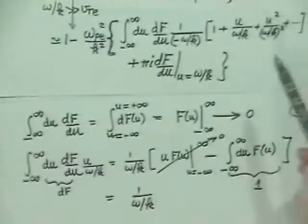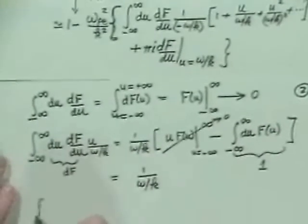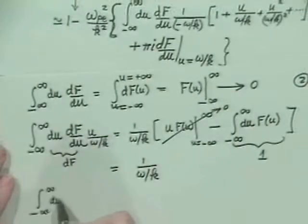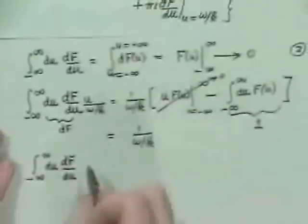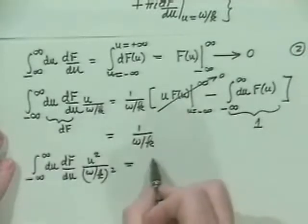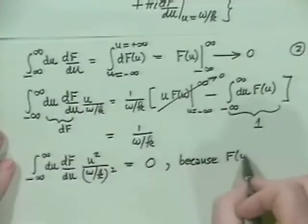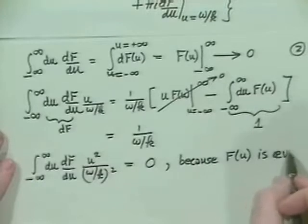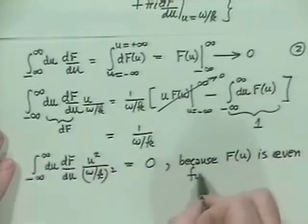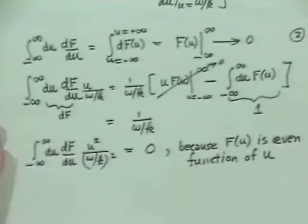The u-squared term: it turns out that for a symmetric function like the Maxwellian, the integral from minus infinity to infinity of df/du times u squared over (omega over k) squared is zero, because f of u is an even function and so its derivative is odd.